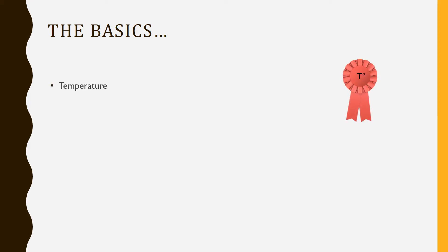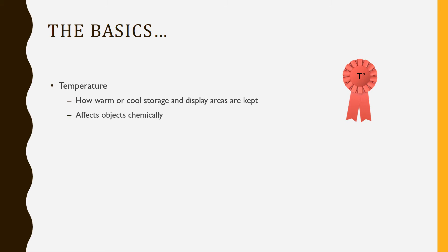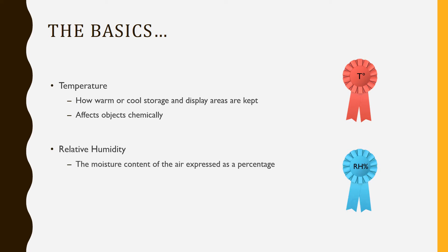Temperature is the measure of heat expressed in Celsius or Fahrenheit, and is used when we discuss how warm or cool a space is. Temperature affects objects chemically in that the greater the temperature, the faster the rate of natural decay accelerates. Relative humidity is the amount of moisture present in the air, expressed as a percentage. Relative humidity affects objects mechanically since it can prompt them to gain or lose moisture, which causes swelling or shrinking of the materials. This process of swelling and shrinking is damaging to the structure of the object — hence mechanical damage.